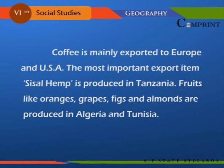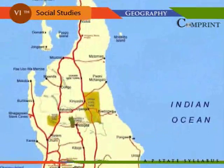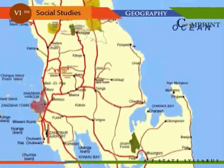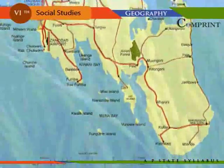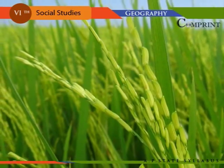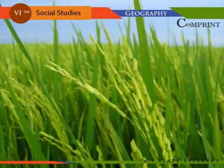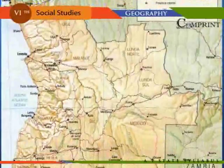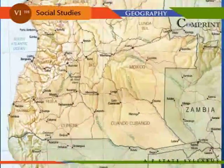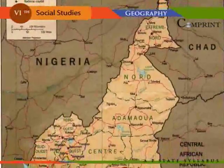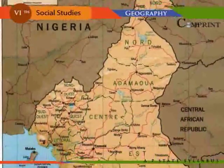Coffee is mainly exported to Europe and the USA. The most important export item, sisal hemp, is produced in Tanzania. Fruits like oranges, grapes, figs, and almonds are produced in Algeria and Tunisia. Zanzibar is the leading producer of cloves in the world and is known as the island of cloves. Other important crops are paddy, sugarcane, corn, and wheat.